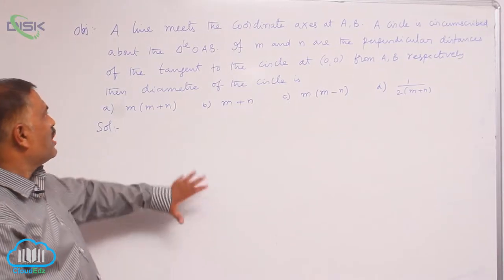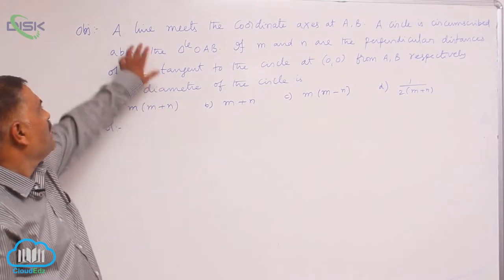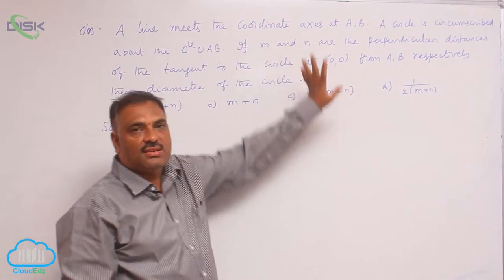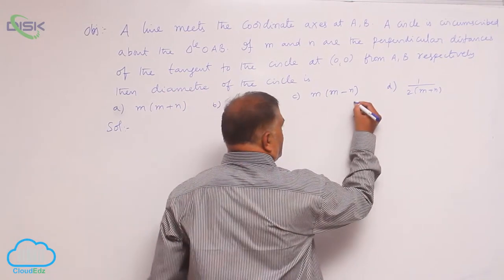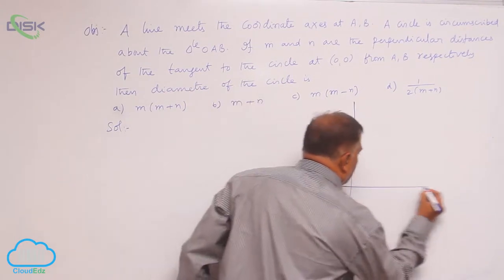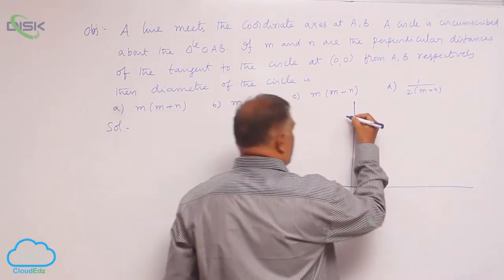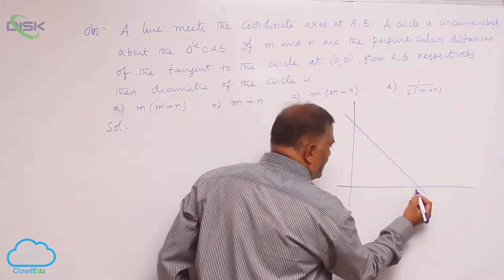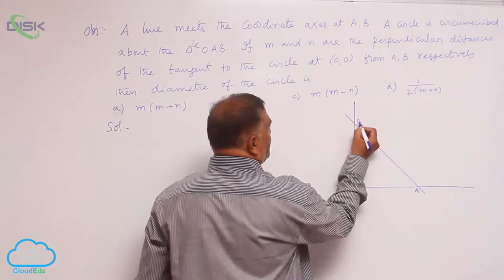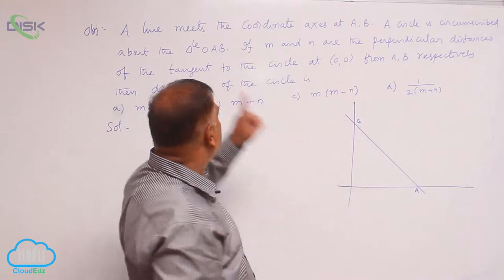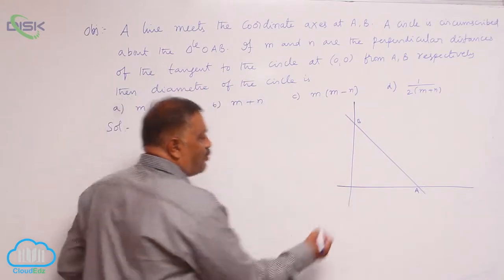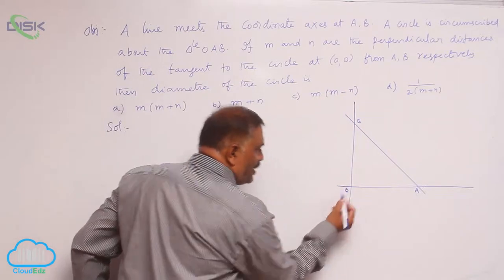We will discuss one more objective problem. A line meets the coordinate axes at A and B. A straight line is meeting the axis at A comma B. A circle is circumscribed about triangle OAB, where O is the origin.